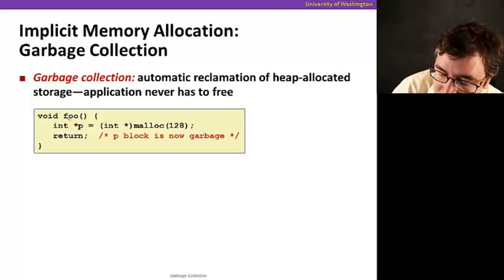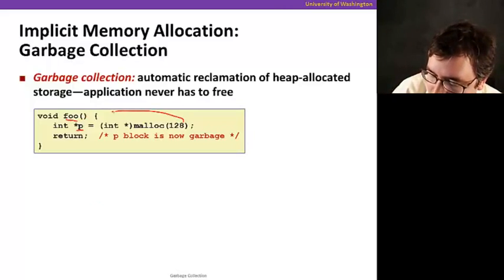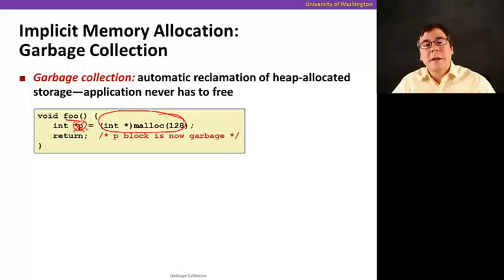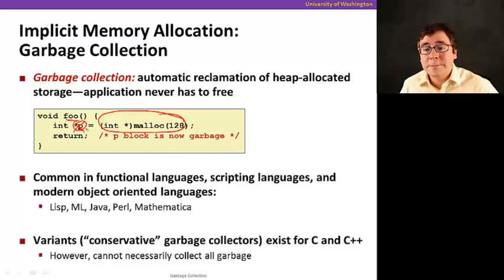For example, suppose that you have a function foo that has a pointer p, it does a malloc, allocates, and then when this function returns, this pointer is going to be gone. So there's nothing that points to the allocated block anymore. It means that the block p is now garbage because nobody can reference it. So you can just go and automatically free it.